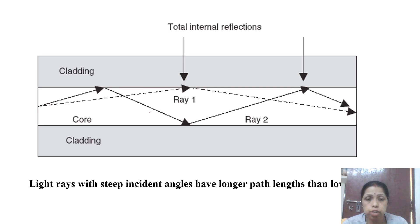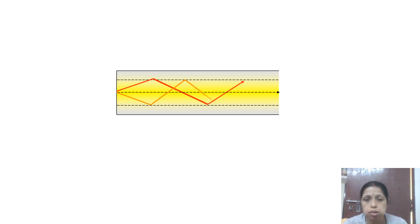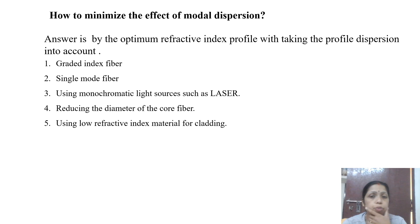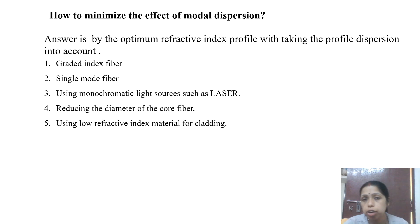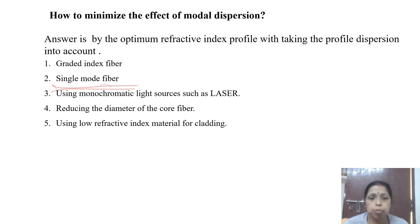Ray 2 takes the shortest time to reach the other end, while another ray takes a longer time. To minimize modal dispersion or intermodal dispersion, one approach is to use single-mode fiber instead of multimode fiber, which gives less dispersion. Another approach is to use graded-index fiber. In graded-index fiber, the refractive index is not constant inside the core — it gradually decreases from the center to the core-cladding interface.